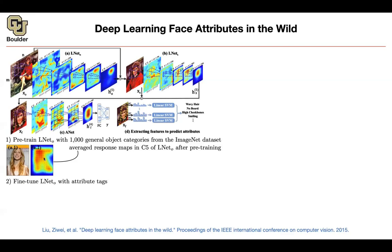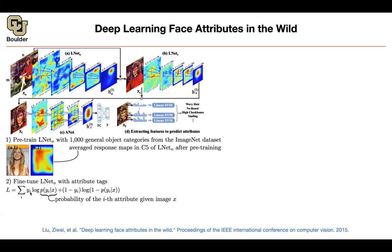We can look at the heat map and say probably this is where the face of the person is. But we want better localization. You're going to fine-tune LNet-O with some attribute tags, which could be: does the person have baby hair? Do they have no beard? Do they have high cheekbones? Are they smiling? Et cetera. These are the tags in your image. If a tag exists, you increase the probability of that tag — so if yi is 1, you increase this, otherwise you decrease it. Yi is either 0 or 1, and there can be multiple tags. This is just saying: probability of the i-th attribute existing in image x.